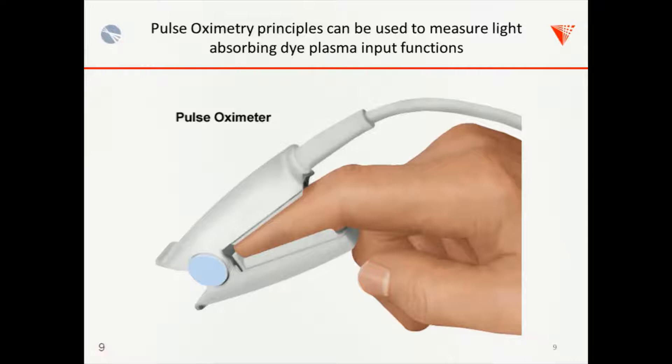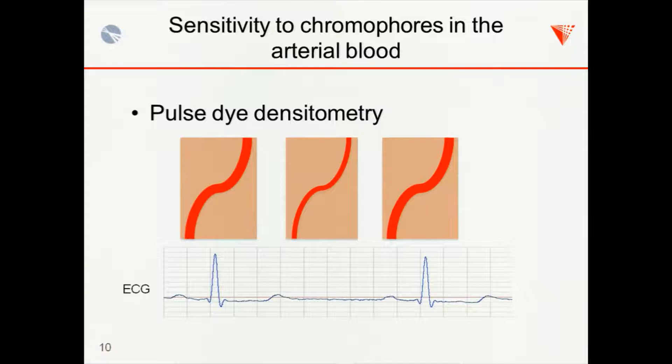Now obviously that's very invasive and you wouldn't want to do this if it was a continuous study or definitely not a human. But there are ways of measuring the arterial input function or at least components of arterial chromophores are measured every day. And most of you are familiar with pulse oximetry. You put a little thing on your finger, some red light shines through your finger and somehow it gives you a measure of your blood oxygenation. But it's really looking at the differences in absorption properties of oxygenated hemoglobin and deoxygenated hemoglobin. So I'll flip through that quickly and then I'm going to show you that you can also look at absorption of a tracer at the same time.